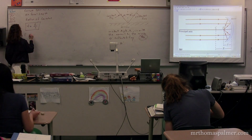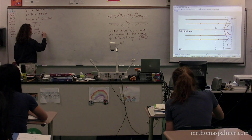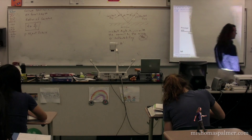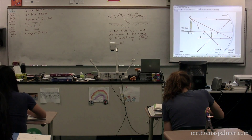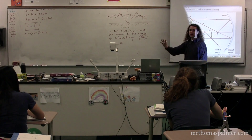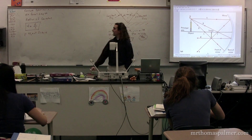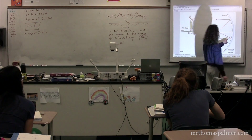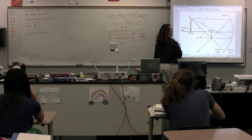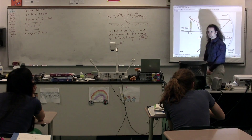P is the symbol we use for the object distance. If we look at this diagram, which shows a mirror, an object, the image of the object, and various rays, the object distance is the distance from the mirror along the principal axis to where the object is located. So the object distance would be from here to here — P, the object distance.